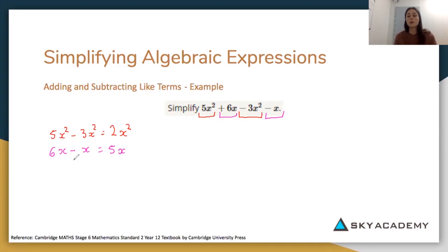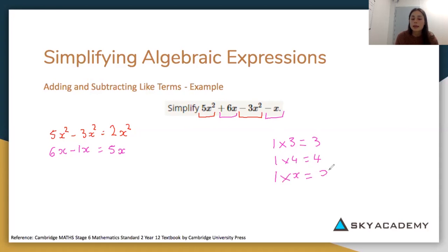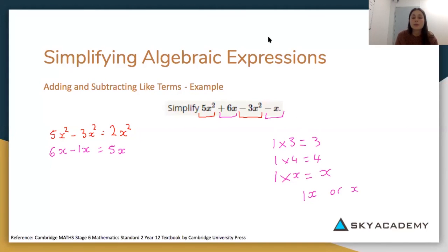You might be wondering how we got 5 from 6x minus x with no visible 1. Well, we actually do have a 1. We can treat x as 1x, because 1 times any number just leaves that number — for example, 1 times 4 is 4, and 1 times x is just x. So another way of writing x is 1x. Whenever you see x by itself, pretend there's a 1 out the front. So 6x minus 1x gives us 5x.